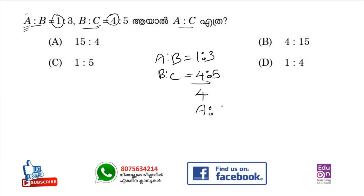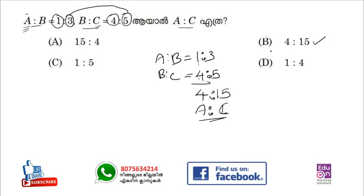A is to C. The answer is 5, 15, 40. Let's take a step and take a step for yourself.